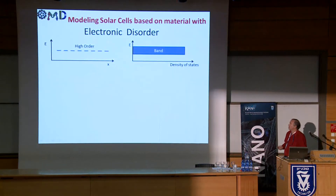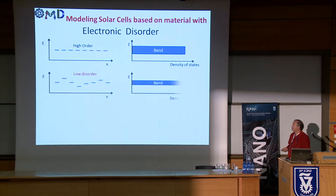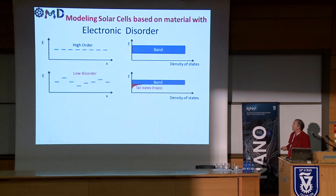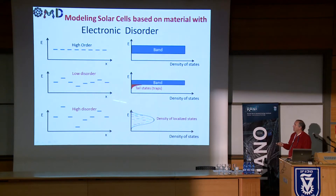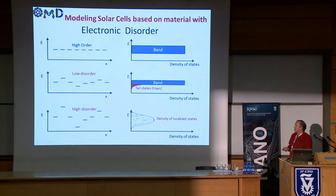As a brief introduction, when you have a nicely ordered crystalline material you talk about energy bands. As you start to introduce disorder, first you see the appearance of traps or tail states, and when disorder is large — especially when you do printing — you have high disorder and a localized density of states, the most popular of which is the Gaussian tail. This is well known in the literature and people have worked on this kind of disordered materials for decades.